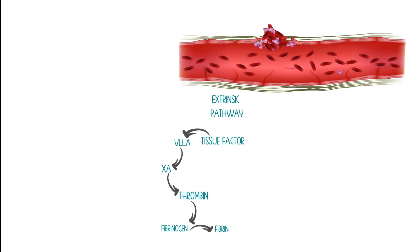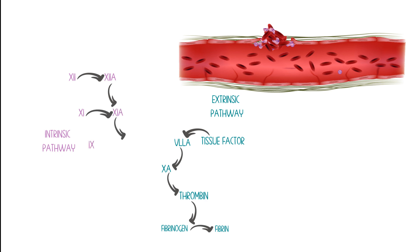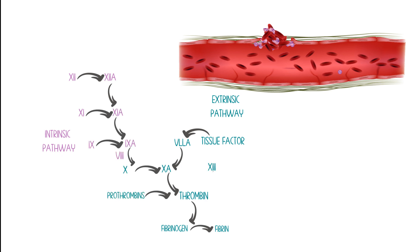Thrombin sparks the activity of the intrinsic coagulation cascade. The intrinsic pathway starts with factor 12, then goes to factor 11, 9, and factor 10. We also have factor 13, which is activated by thrombin and links fibrin together.